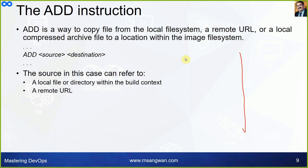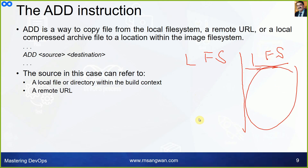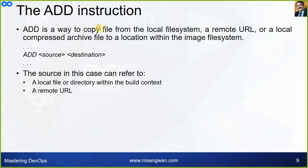Think of your current local file system versus your image file system. You want your application, configuration, and libraries to be inside the image file system. For that you need to copy your source from your local file system, or from a remote location, into the image. Then you execute commands like installing software or building binaries. The ADD instruction is a way to copy files from the local file system, a remote URL, or a local compressed archive to a location within the image file system.